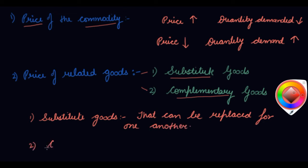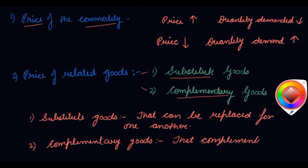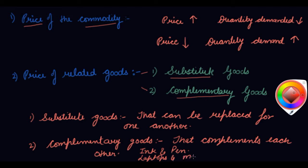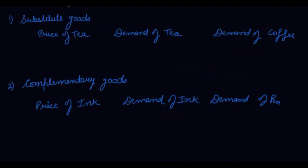The second type is complementary goods — goods that complement each other. Examples include pen and ink, laptop and its motherboard. These are goods that complete each other and work together. So complementary goods are goods that complement each other.